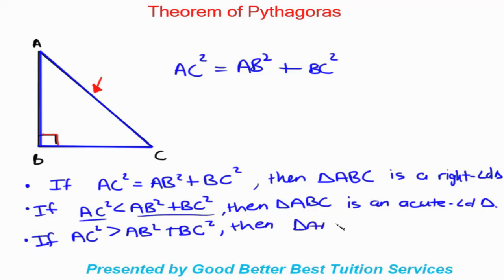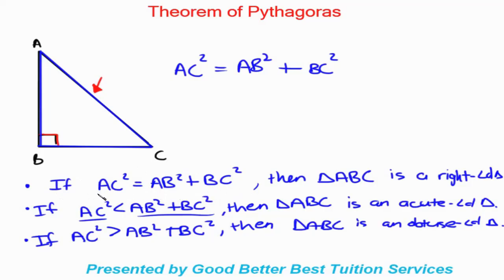And obviously if AC squared is more than AB squared plus BC squared, then triangle ABC is an obtuse angled triangle. So just to repeat: find the sum of the two squares of the other two sides. If it equals AC squared it's right-angled; if it's more than the hypotenuse it's acute angled; if it's less, it's obtuse angled.